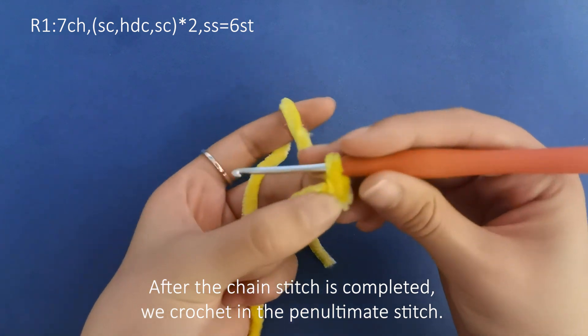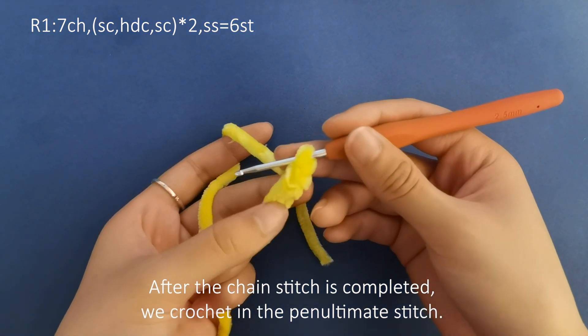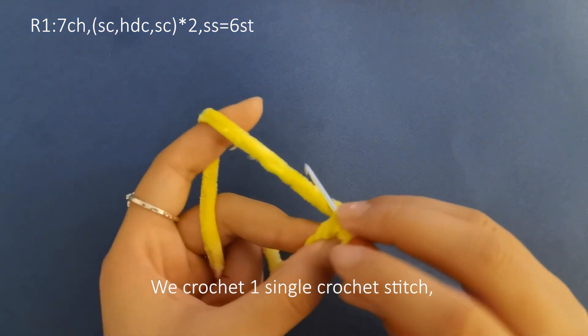After the chain stitch is completed, we crochet in the penultimate stitch. We crochet 1 single crochet stitch.